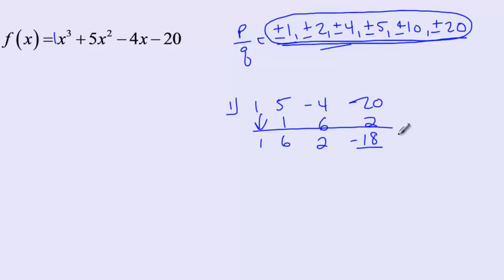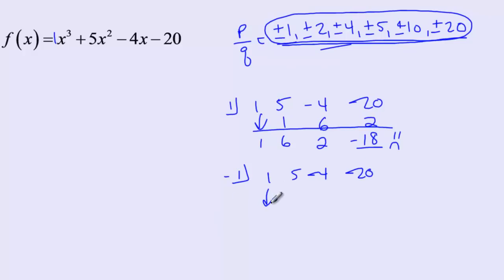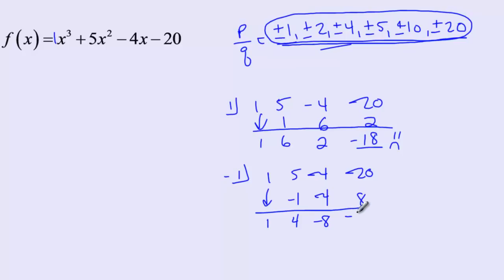That's a sad face because it's not a zero. Let's try negative 1: coefficients are 1, 5, negative 4, negative 20. Bring down the 1. Negative 1 times 1 is negative 1, add to get 4, then negative 4, then negative 8, giving negative 12. That's another sad face — negative 1 is also not a zero.